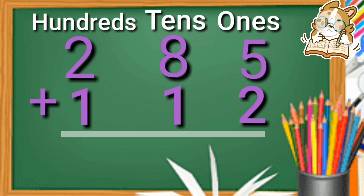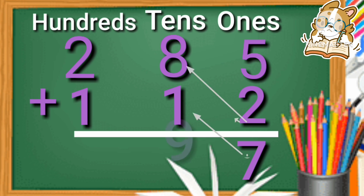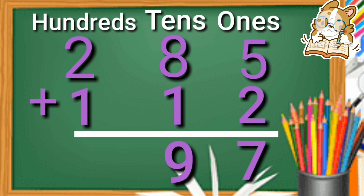Two hundred eighty-five plus one hundred twelve. First of all we add the ones: five plus two is equal to seven. Then we add the tens: eight plus one is equal to nine.